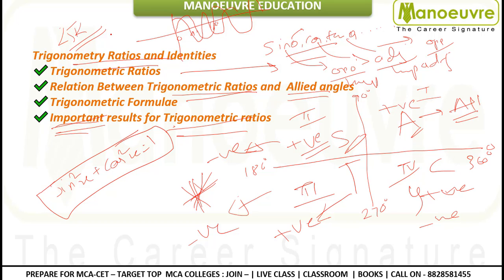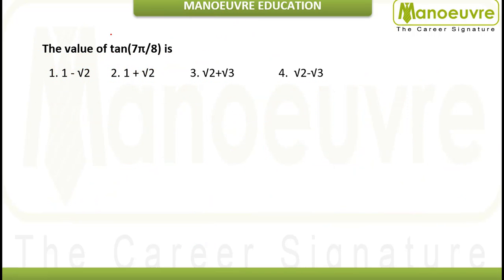Now let's move to questions related to trigonometric ratios and identities. The first question asks: what is the value of tan(7π/8)? The first thing you have to do when finding any trigonometric identity value is convert the angle into a standard value. The standard trigonometric angles are 30°, 45°, 60°, 90°, 180°, and so on.